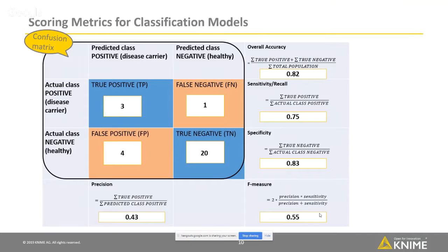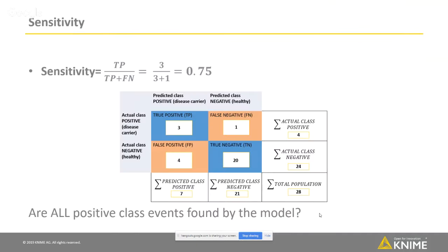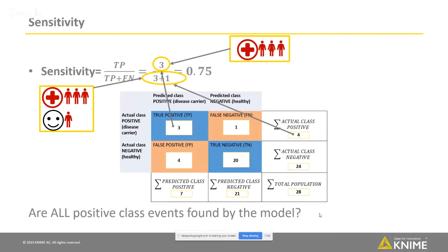I will now introduce how to interpret and calculate the scoring metrics. I start with the class statistics, which report the model performance from the point of view of one class — the positive or the negative class — and they are commonly reported as pairs. One pair is called sensitivity and specificity. Sensitivity tells how good the model is in detecting all positive class events — all disease carriers in this case. We calculate sensitivity by dividing the number of true positives by the number of all positive class events in the data. For this model, the sensitivity value is 0.75, which means that three out of four of the positive class events, so the disease carriers, were predicted correctly by the model.